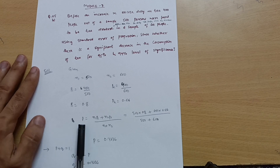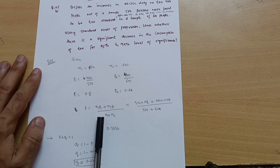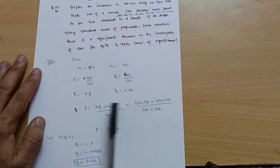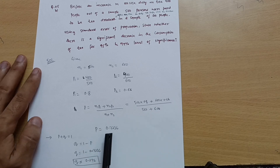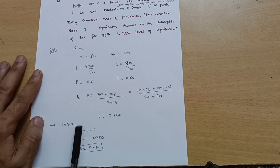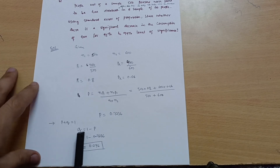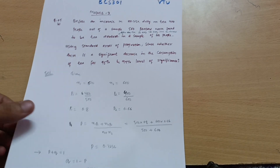Now calculate the overall combined probability p, which is used in the formula later. The formula is p = (n1·p1 + n2·p2) / (n1 + n2). Substituting the known values gives p = 0.7236. Since p + q = 1, we get q = 1 − p = 1 − 0.7236 = 0.276.